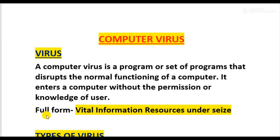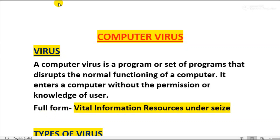Hello everyone, this is the third chapter for Class 7th — Computer Virus. Before starting, I want to clear some points. Computers and data have become the lifeline of every organization. If something goes wrong with them, business almost comes to a standstill. This could cause a loss of thousands or even millions of hours of hard work and research.